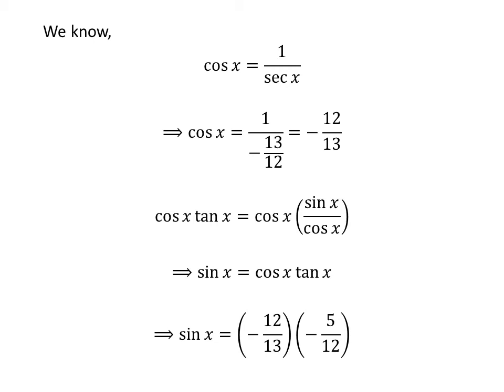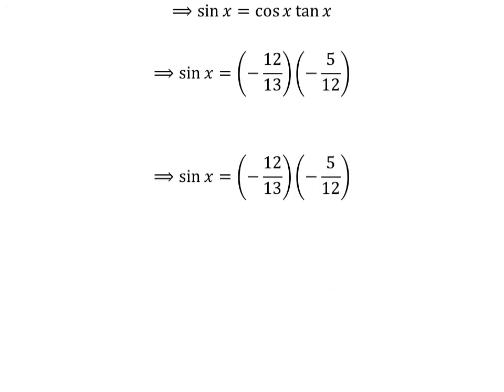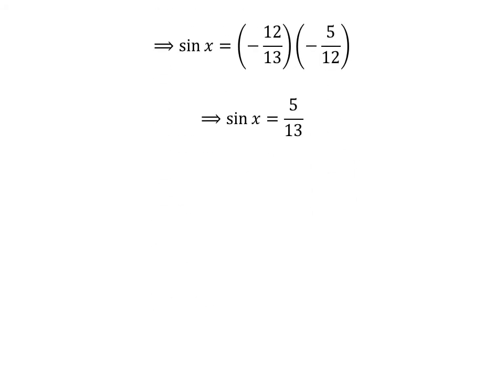Plugging in the values of cosine of x and tangent of x gives us sine of x equal to minus 12 upon 13 times minus 5 upon 12. The common factor of minus 12 in the numerator and denominator cancels, giving us sine of x equal to 5 upon 13.